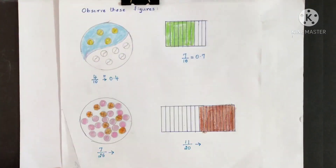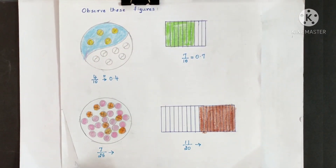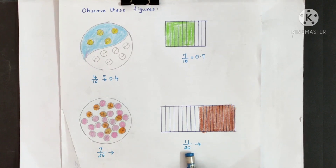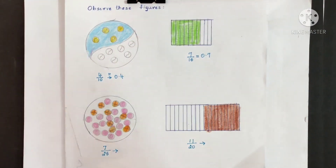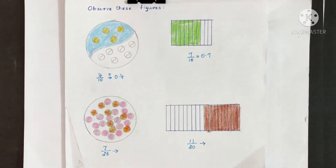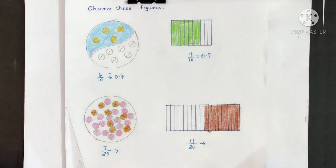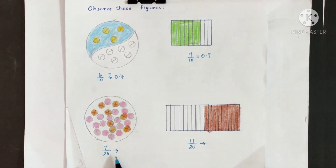Now we will see how to write fractions whose denominator is not 10 or the higher powers of 10 as decimal fractions. When the denominator is not 10 or the higher powers of 10, you need to convert the denominator into 10 or the higher powers of 10.